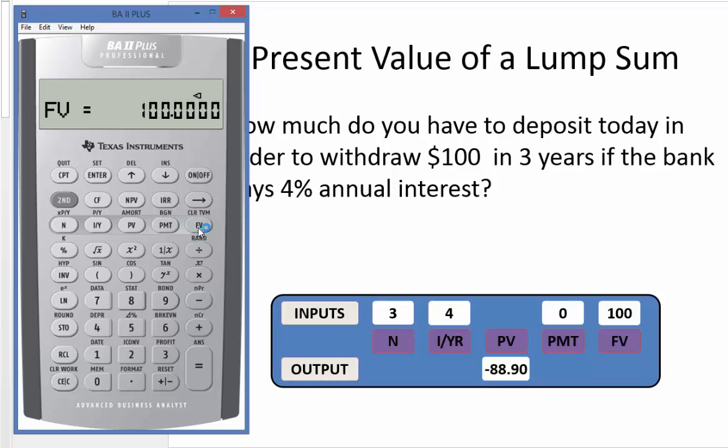We solve for the present value and this is the answer. We get about $88.90. So if we deposit $88.90 today at 4% annual interest for three years, we will have at the end of the third year $100.